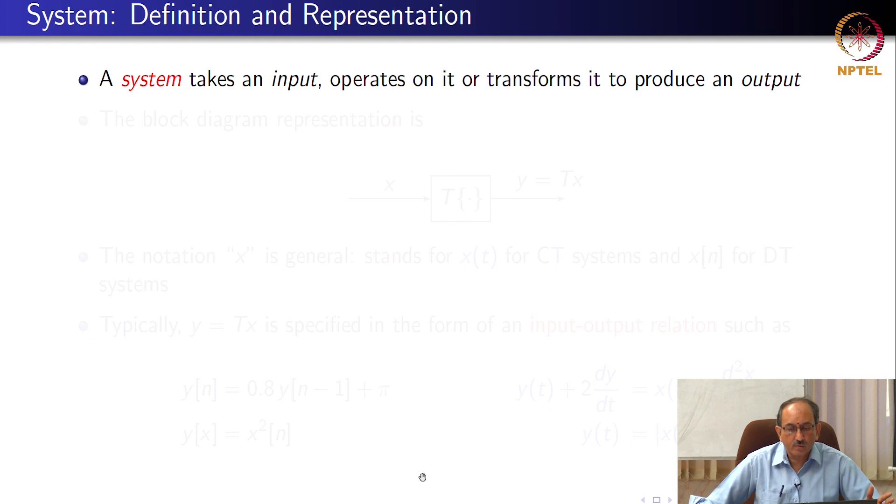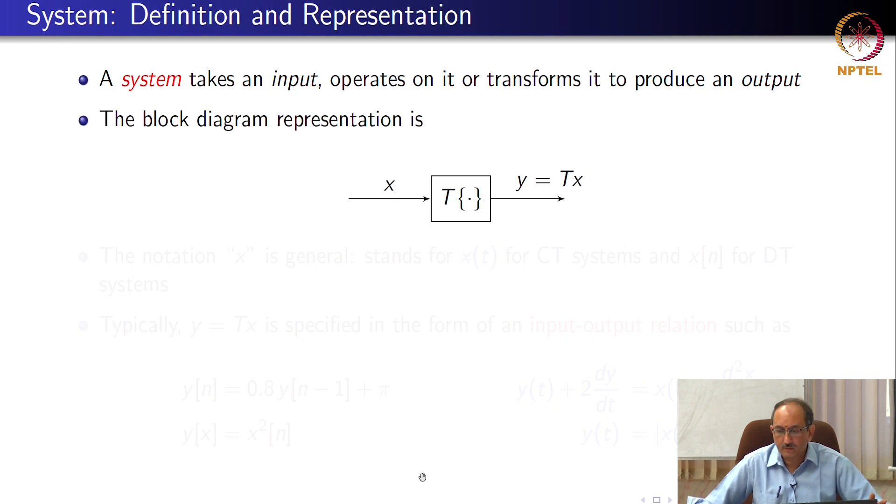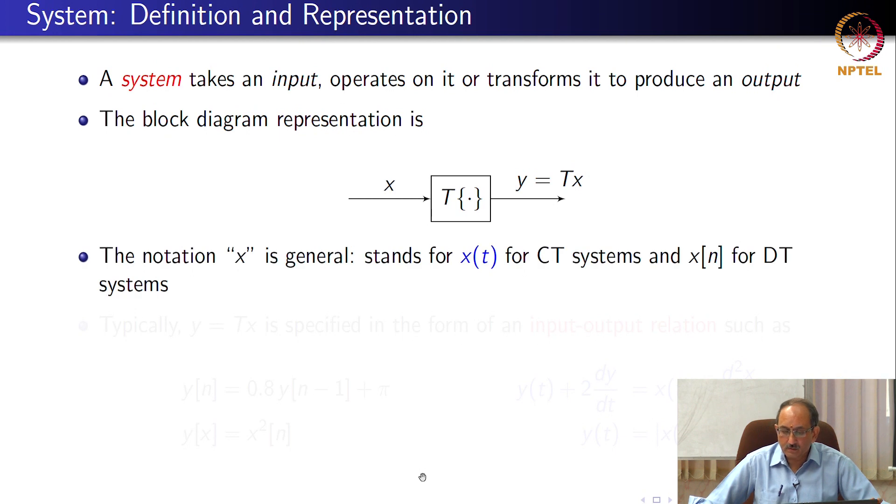So, a system takes an input, operates on it or transforms it, and produces an output. Typically this is represented as a block diagram as x, the system is represented by an operator T, and y equals T of x is the output. And the notation x is general; it can either stand for x(t) or x[n], based on whether you are looking at CT or DT systems.